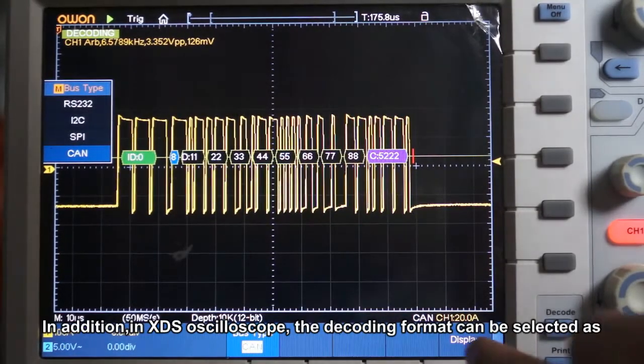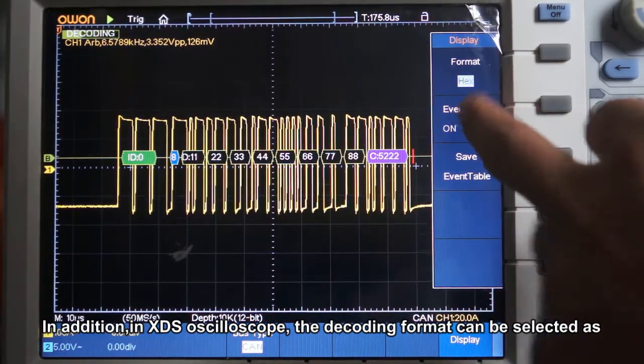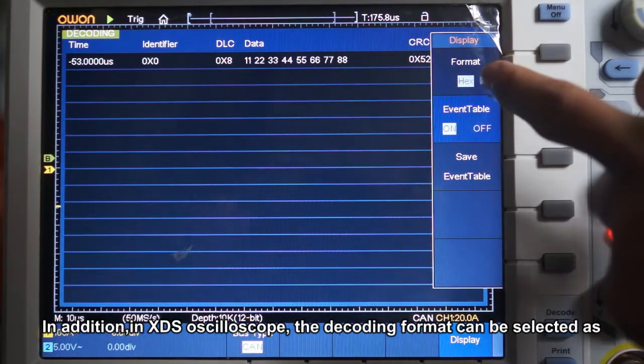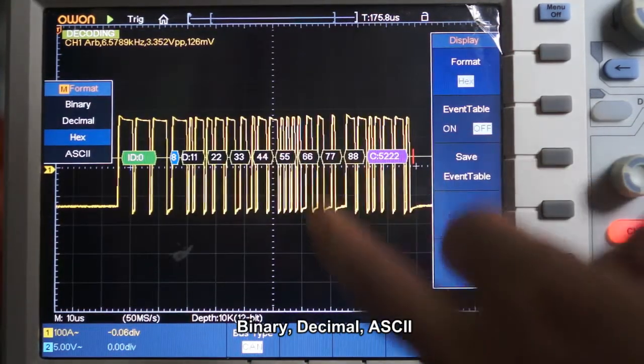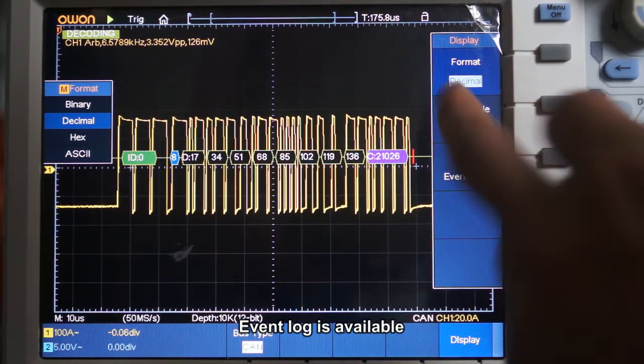In addition, in XDS oscilloscope, the decoding format can be selected as binary, decimal, ASCII too. Even log is available.